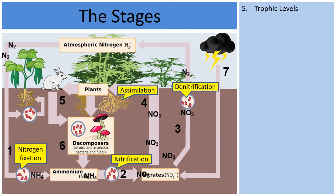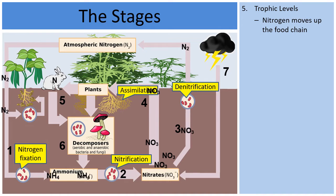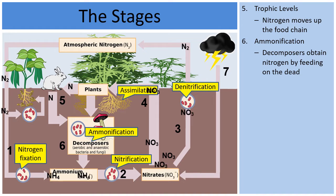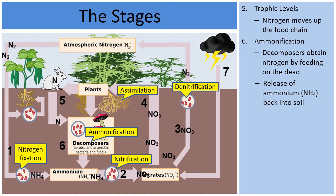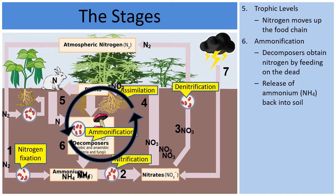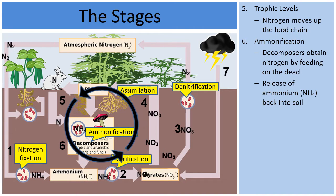In area five, the nitrates simply move up the food chain — a rabbit eats the plants, then hawks come along and eat the rabbit, and so on. Then in area six, decomposers like fungi take in nitrogen from animal droppings, dead and decaying leaves, and dead organisms. Through a process called ammonification, they release NH₄ ammonium back into the soil, completing the inner cycle.